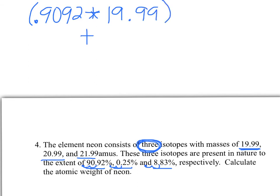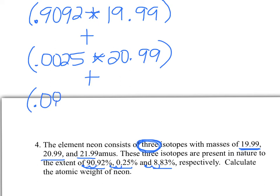We're going to add that to isotope two is not .25, but .0025 times 20.99. So there's the second isotope. Then we're going to add that to the third isotope, which is not 8.83, but .0883 times 21.99.